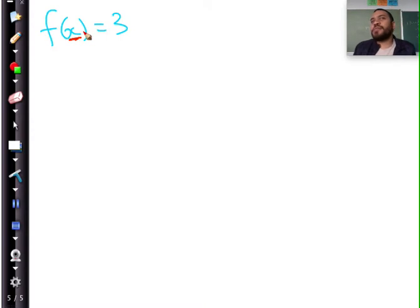So f of x, as we can see, f of x equals 3 is a linear curve. More specifically, it's a horizontal line with a gradient equal to 0. And what we've seen now also is that this curve is not dependent on x, right? No matter what x value you put in.